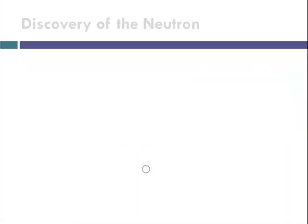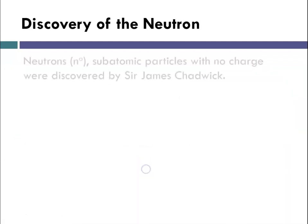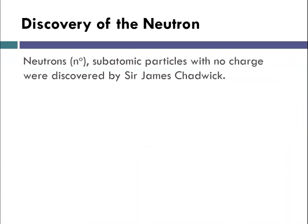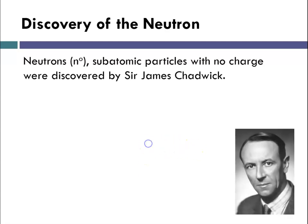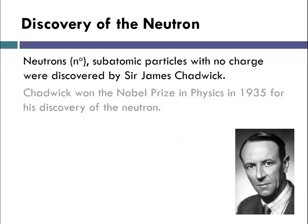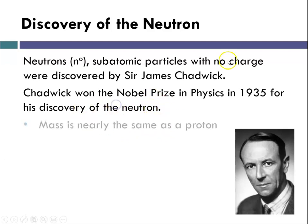There was some other particle present in the nucleus that accounted for all of that mass, and that is the neutron. The neutron is the neutral subatomic particle, and they were discovered by Sir James Chadwick.